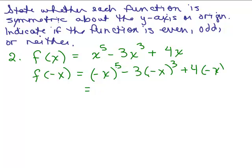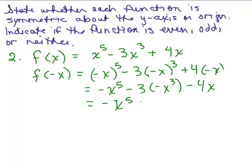So we have negative x to the fifth power — that's negative x to the fifth. Negative x cubed is negative x cubed, and I've got minus 4x. A negative times a negative gives a plus 3x cubed minus 4x.